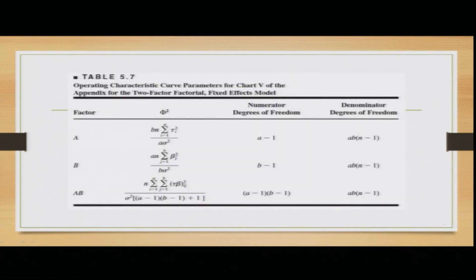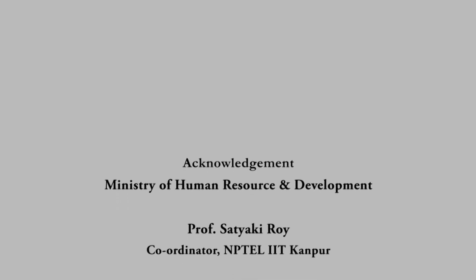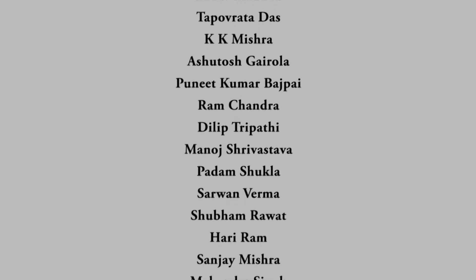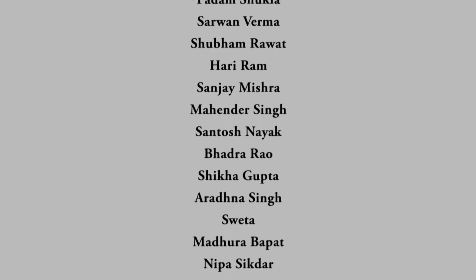Operating characteristic curve parameters for the two-factor fixed effects model are tabulated for factors A, B, and their combinations (A, B, AC, BC, ABC, etc.). The Φ² values and degrees of freedom are used to find the required sample size from the curves. With this, we conclude the 18th lecture and will continue with more discussion on factor models and additional examples for better understanding. Thank you very much, and have a nice day.